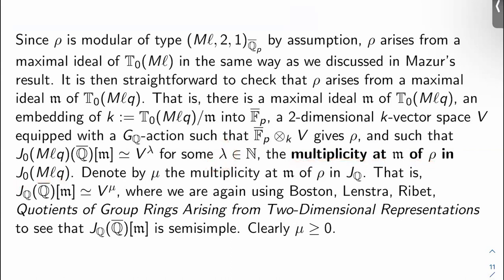Now look, I mean ρ, there's a multiplicity of ρ at m in just the big Jacobian J_q too, right? We'll call that μ. So that is the Q̄ points of J_q and then take the m-torsion is isomorphic to V^μ. Okay, now again, all this only makes sense if we believe Boston-Lenstra-Ribet's result that this m-torsion of J_q(Q̄) is semi-simple or else this doesn't really mean anything. And μ is at least zero, of course.